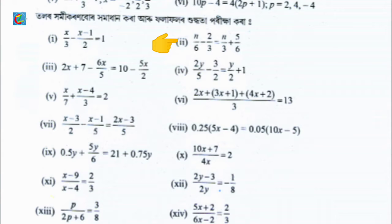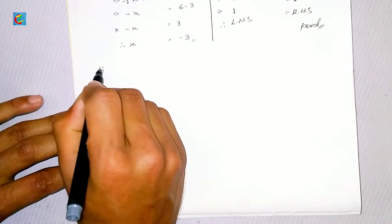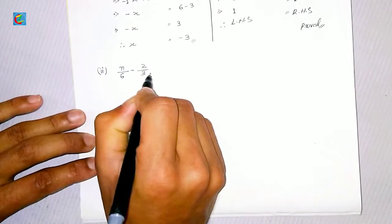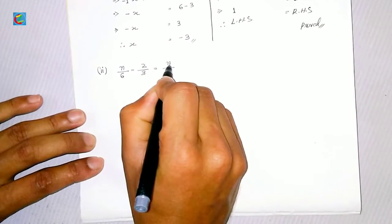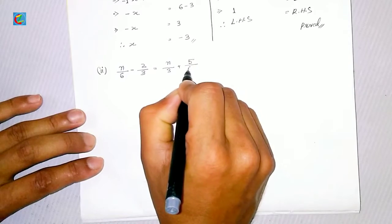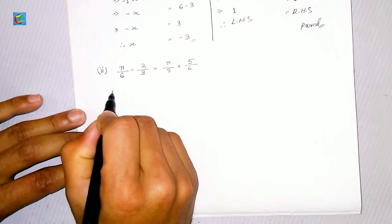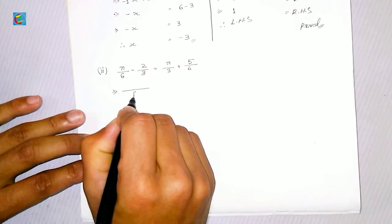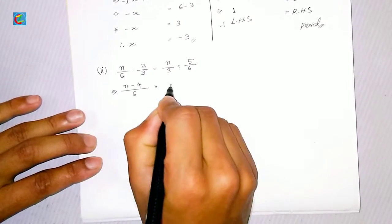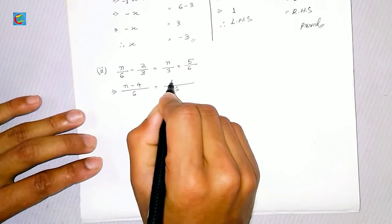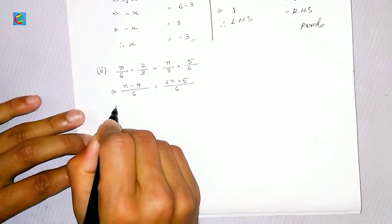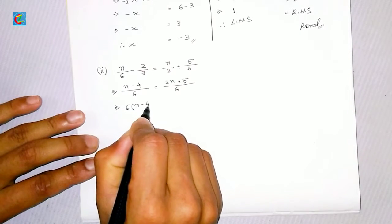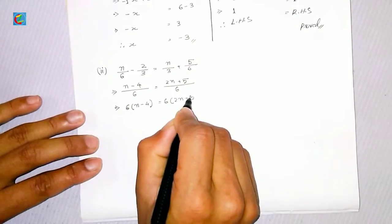Now I'm going to do the next number question. I'm going to solve n divided by 6 minus 2 divided by 3 is equal to n divided by 3 plus 5 divided by 6. Let me work through this equation step by step.